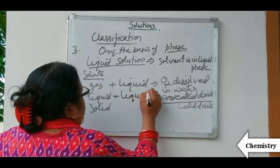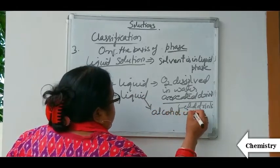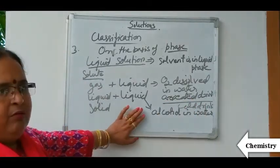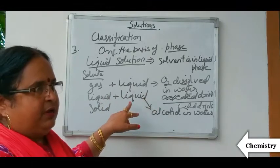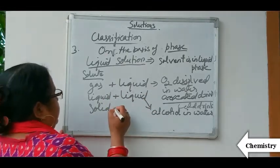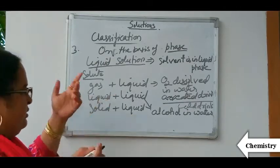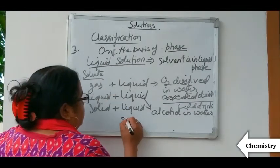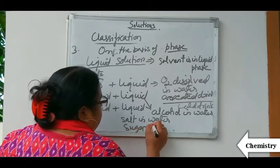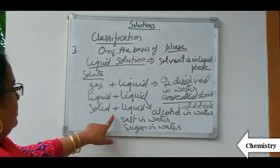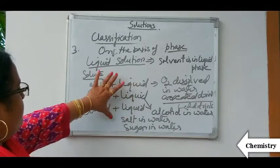Second type is liquid in liquid — for example, alcohol in water. In this type, both solute and solvent are present in liquid phase. Third type is solid in liquid. A simple example is salt in water or sugar in water. Salt and sugar exist in solid phase and water is present in liquid phase. So in liquid solution, there are three types.